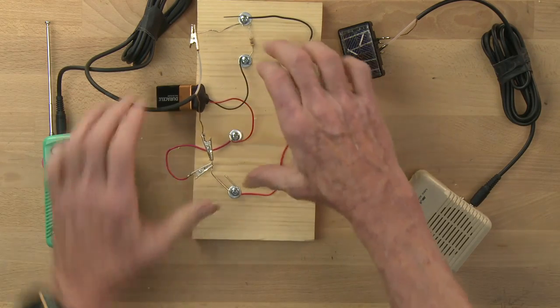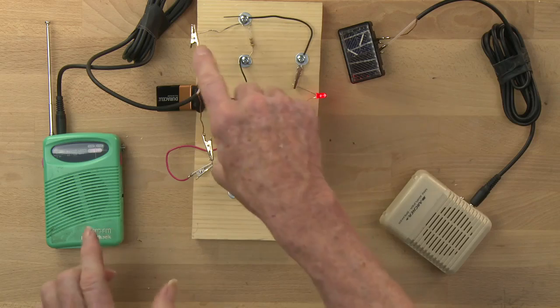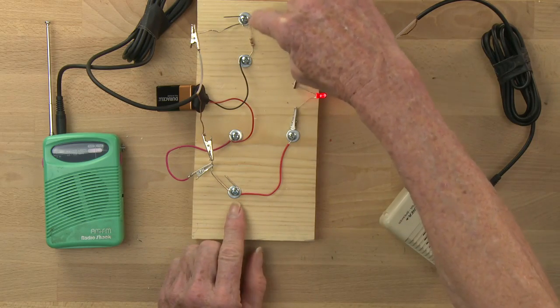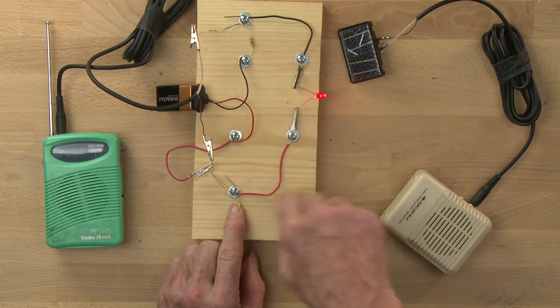So I add into this circuit a 9-volt battery in parallel with the audio signal. That 9-volt battery sends DC electric current through the resistor and through the LED and makes it light.